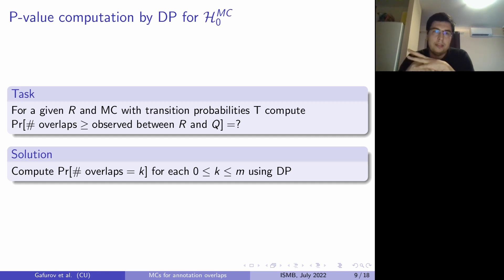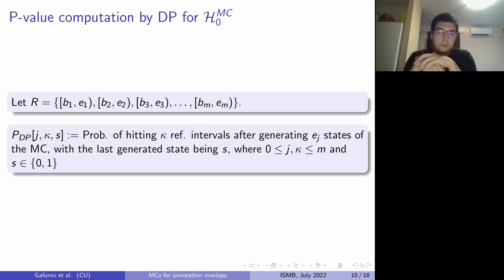So let's talk about that dynamic programming approach. So let's denote the intervals in R as B1, E1, B2, E2, etc. up to Bm, Em. And now we define our dynamic programming table P with parameters J, Kappa, S as the probability of hitting exactly Kappa reference intervals after generating J states of the Markov chain. So we end just after the Jth interval. With that, that our last state is S. And so this is our dynamic programming table.